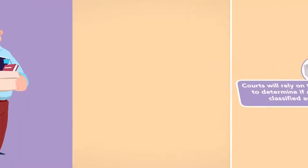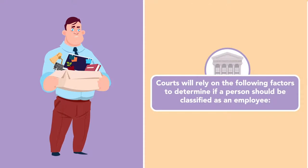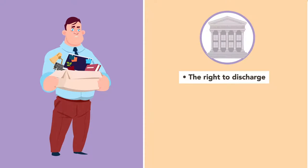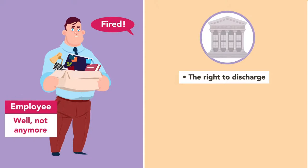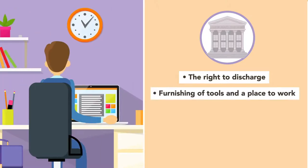To summarize, courts rely on the following factors to determine if a person should be classified as an employee. The right to discharge: if an employer has the right to fire someone, he's likely to be considered an employee. Furnishing of tools and a place to work: if an employer provides a person with tools and a place to complete work-related tasks, he's likely to be considered an employee.